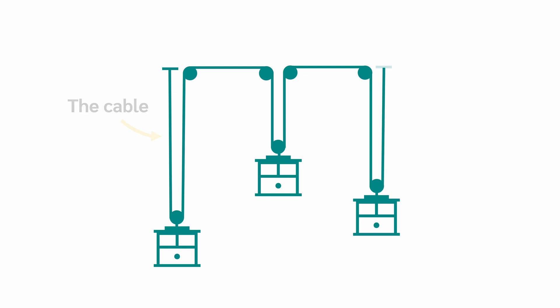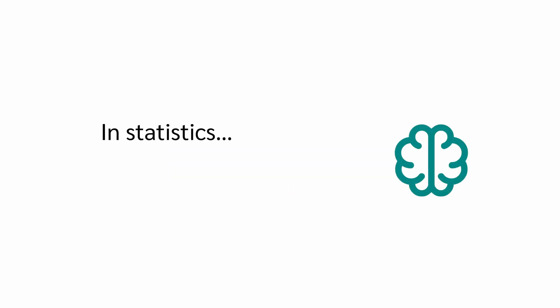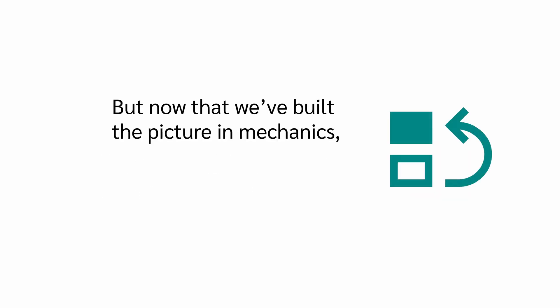So, in mechanics, you can literally see the constraint, the cable, and you can also write it as an equation. In statistics, on the other hand, it is difficult to imagine the constraints. But now that we've built the picture in mechanics, let's carry it over to statistics.